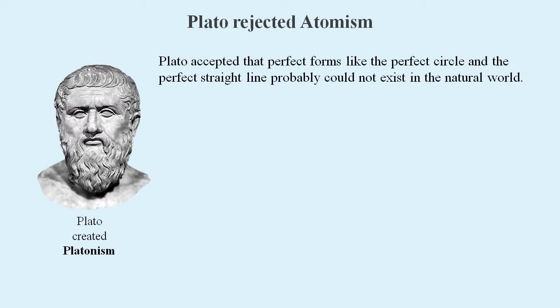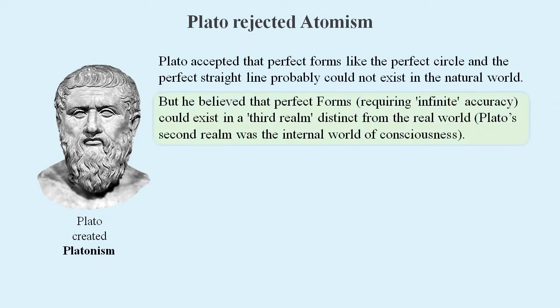Like today's mathematicians, Plato accepted that perfect circles and perfect straight lines probably can't exist in physical reality. And like today's mathematicians, Plato believed we could imagine these things. Although today people don't even question how a finite brain can supposedly achieve this imagining of the infinite. Whereas Plato suggested that we somehow connect to a third realm through what he called the second realm of consciousness.